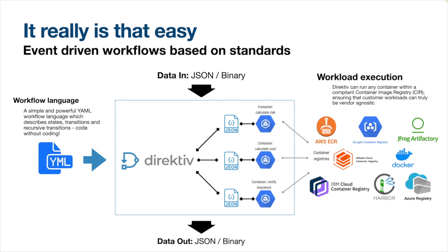For the workflows themselves, JSON or binary data can be passed into the Directive engine in the format of events or API calls, whatever you choose. Directive will take this data and pass it to each of the containers you specify in the sequence and workflow you've identified. Directive will also pull containers from the container repositories or registries you've defined. What you get at the end is JSON or binary data out, depending on how the transformation works within the workflow.